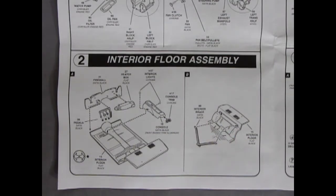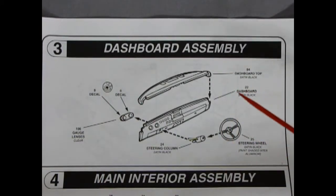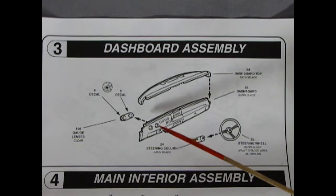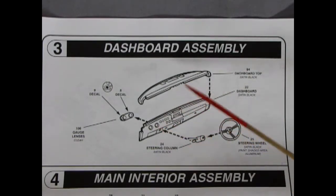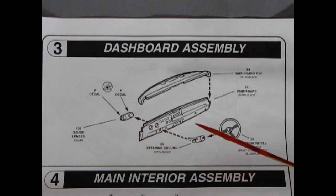So let's check out our other panels to see more of the interior. Panel three here shows the dashboard assembly and you get a multi-piece dashboard which is nice because you can get your brush in here, paint the details and then put the top on. So we have gauges with decals that go on the front of the dashboard, the top, the steering column and the steering wheel.